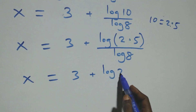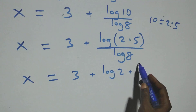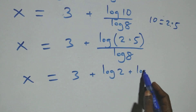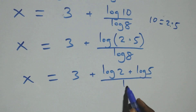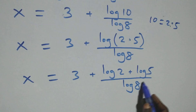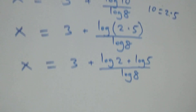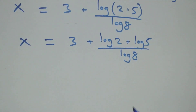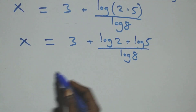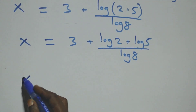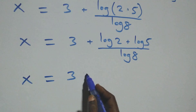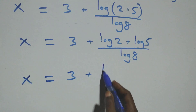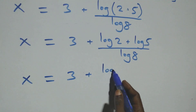Then log 8 cancels each other in the first fraction, leaving 1. So x equals 1 plus log 10 over log 8 plus 2, which is 3 plus log 10 over log 8. Now 10 can be written as 2 times 5.